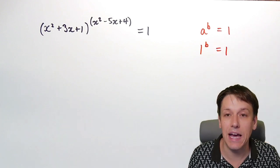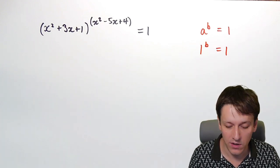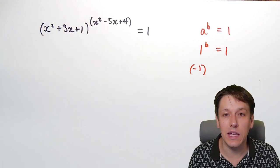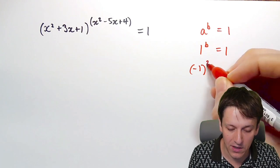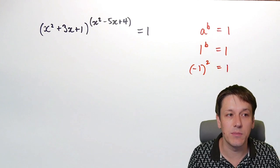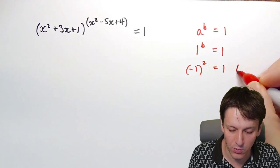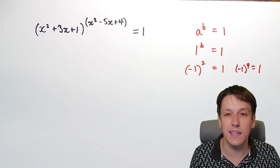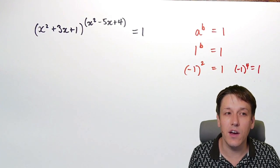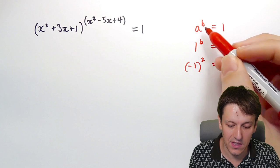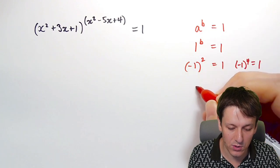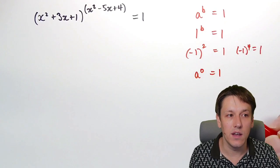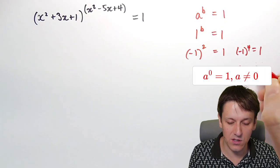If we raise 1 to any power, we always get 1. If I raise minus 1 to a power, I might also get 1 if that power is an even number — for example, minus 1 squared is 1, minus 1 to the power of 4 is 1, and so on for any even power. The other way I could get 1 is if the power b is 0: a to the power of 0 gives 1, so long as a isn't equal to 0.